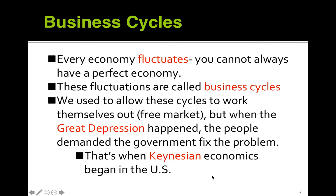Business cycles: every economy fluctuates — you cannot always have a perfect economy. If you want the same economy all the time, you can go communist, but when you flatline, it's like a heartbeat going flat — you're pretty much dead. If you want the economy to grow and have good times, you will also have bad times. These fluctuations are called business cycles. A positive cycle goes up; a negative cycle goes down.